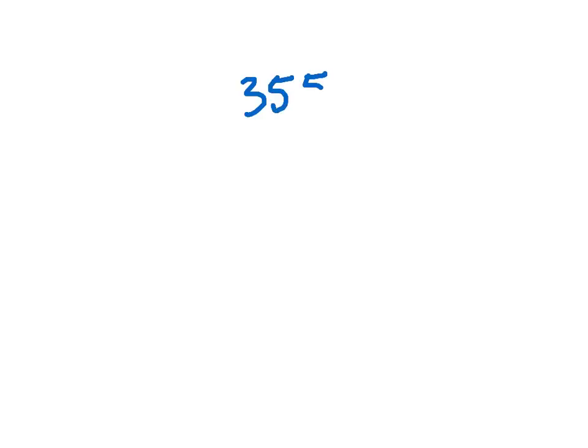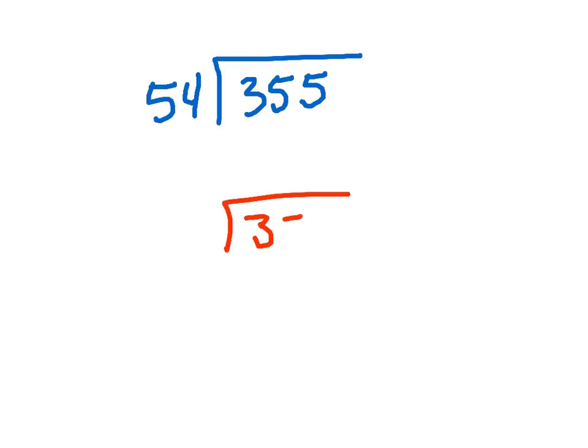Try this one: 355 divided by 54. The easy fives — pause it and see if you can solve this one. I'm thinking I'll take this and go 350 divided by 50. And 50 goes into 350 seven times. Did you get that? I hope so.